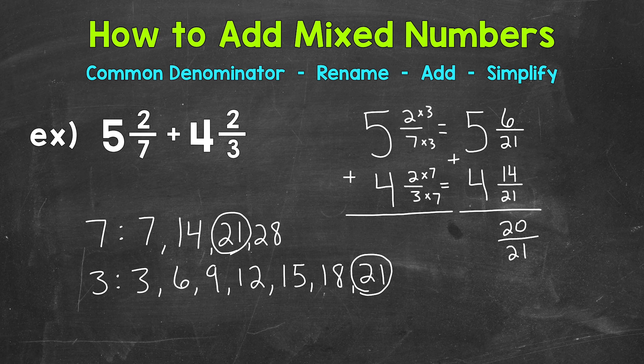Now let's add the whole numbers. So 5 plus 4 is 9. So our final answer is 9 and 20 twenty-firsts. Always check to see if you can simplify the fractional part of a mixed number. Well, 20 twenty-firsts is in simplest form. The only common factor between 20 and 21 is 1.